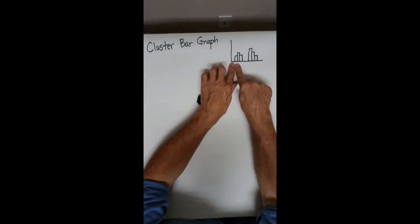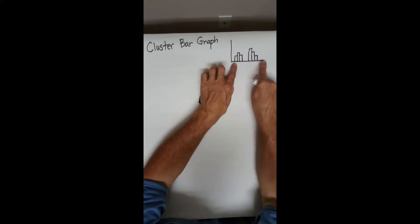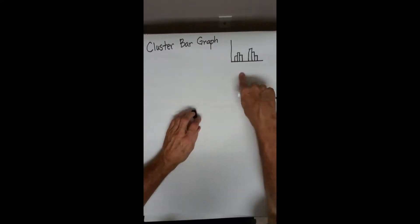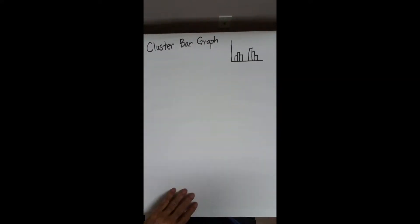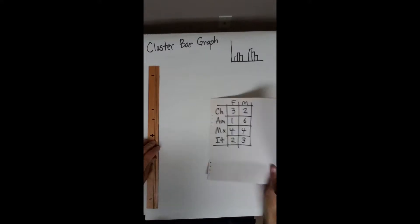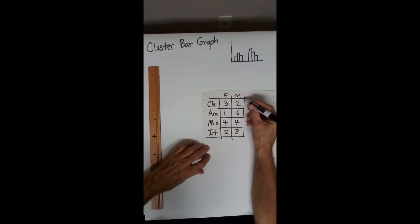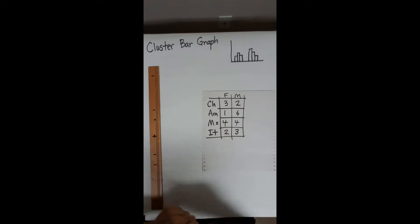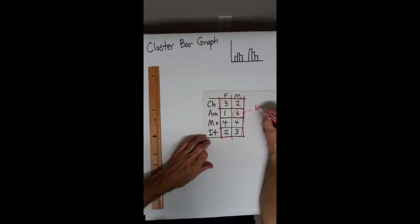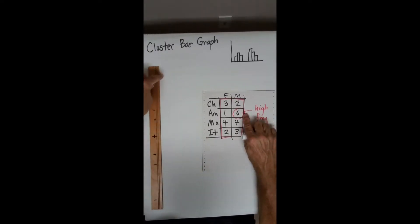The bars within each cluster must be the same width, and the gaps between clusters must be the same width. You may have three or four clusters, and you may have four or eight bars in a cluster — it depends on your problem. I'm going to draw the bars vertically because it's easier. When drawing the graph, examine the body of your table to find the highest frequency. That tells you the scale for your frequency axis. We're going to go up to six on our frequency scale.